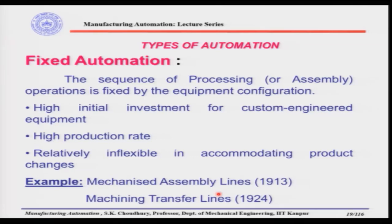Next, let us see the types of automation. Normally, we have three types: fixed automation, programmable automation, and flexible automation. Let us look at fixed automation, which is normally used in mass production. The sequence of processing or assembly operations is fixed by the equipment configuration.